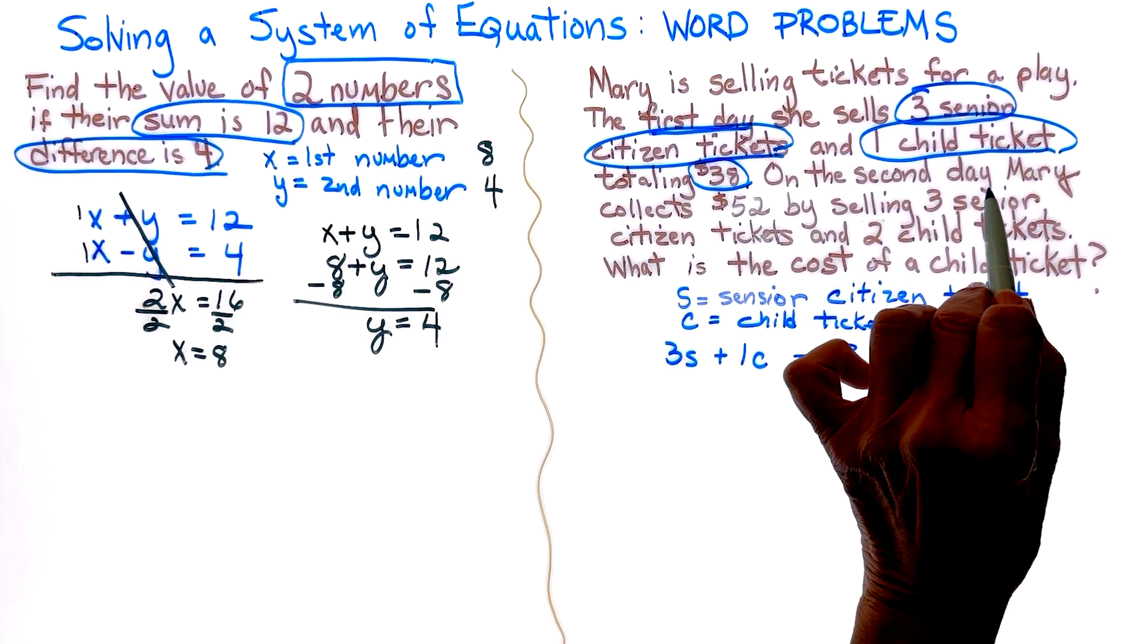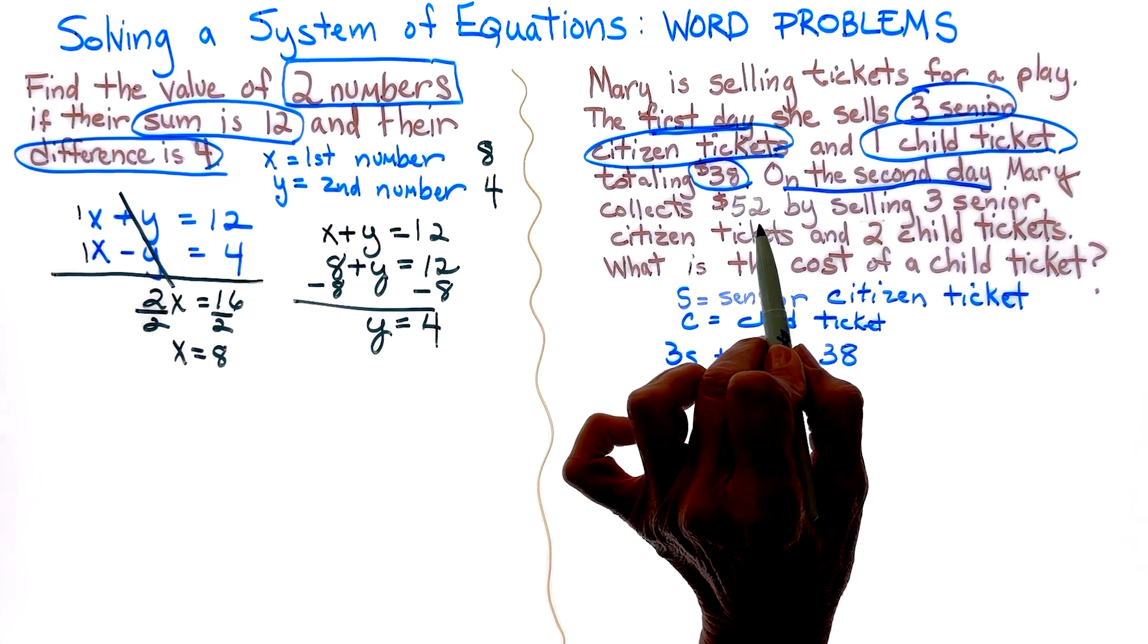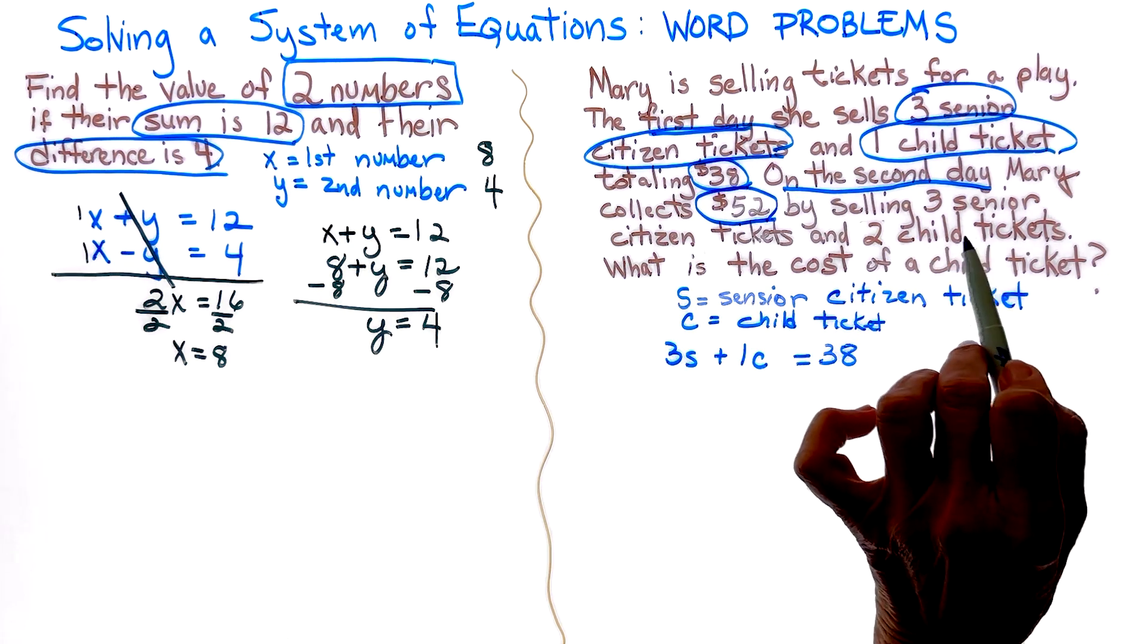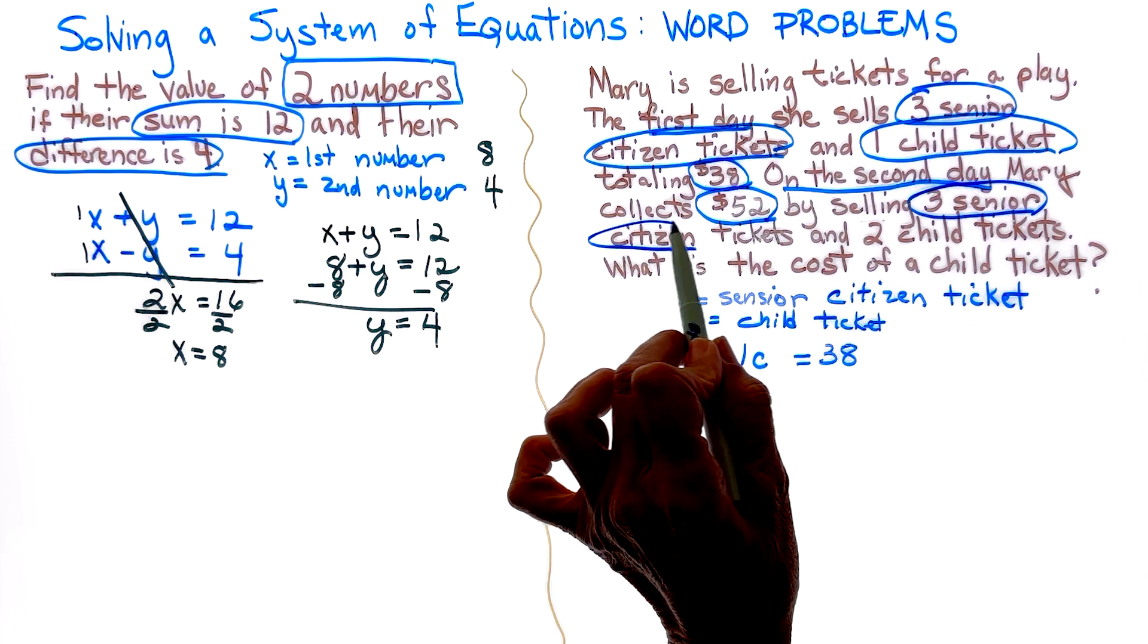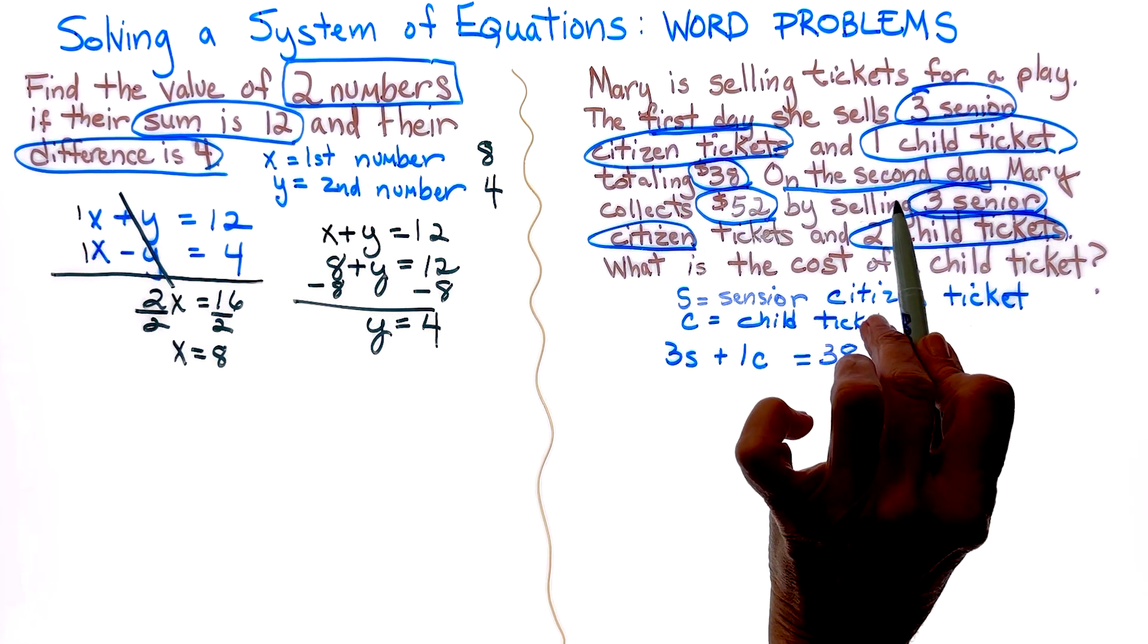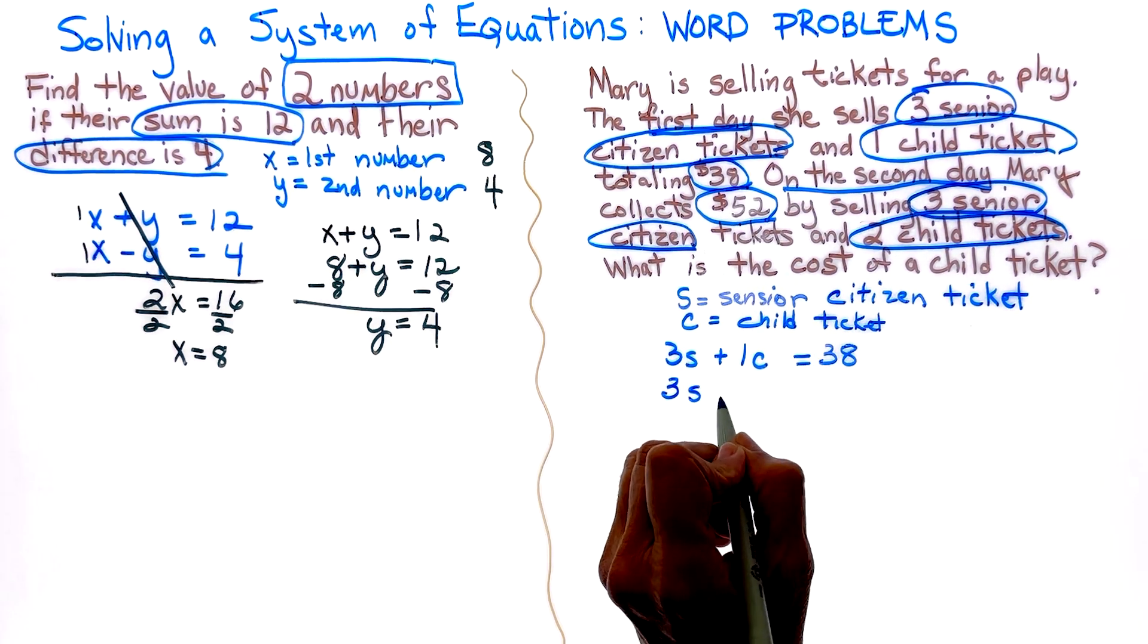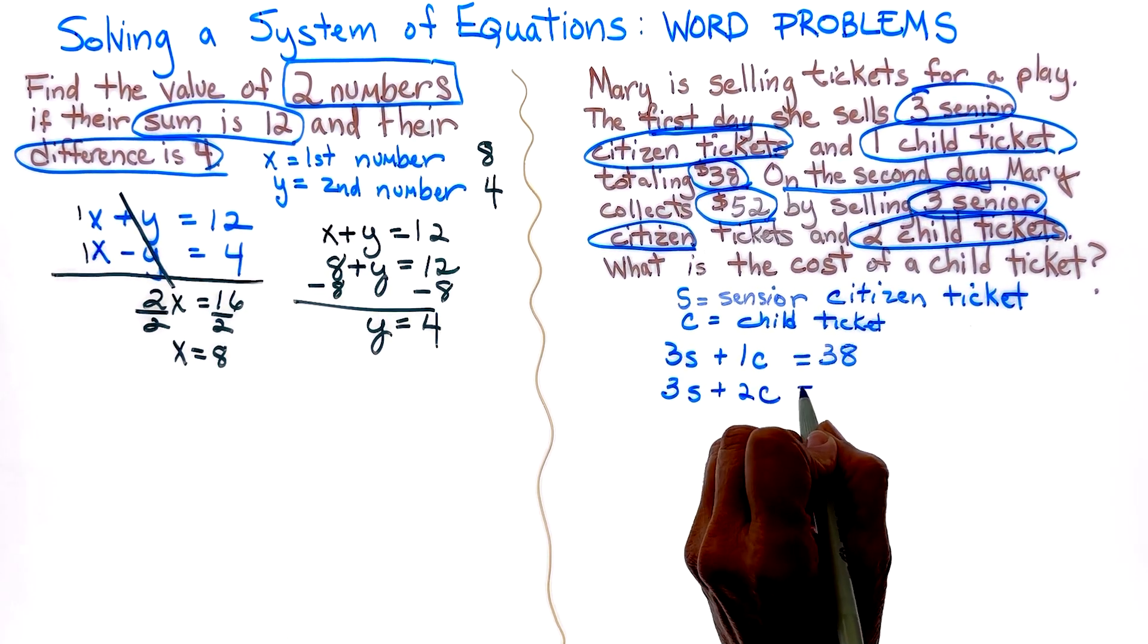So let's look at the second day, which that's going to be our second equation. Mary sells, oh, they give us the total first, $52 by selling three senior citizen tickets and two children tickets. And what is the cost? Again, we're looking for the cost of a child ticket, but let's write our second equation. We have three senior citizens. This time we have two child tickets and the total is 52.